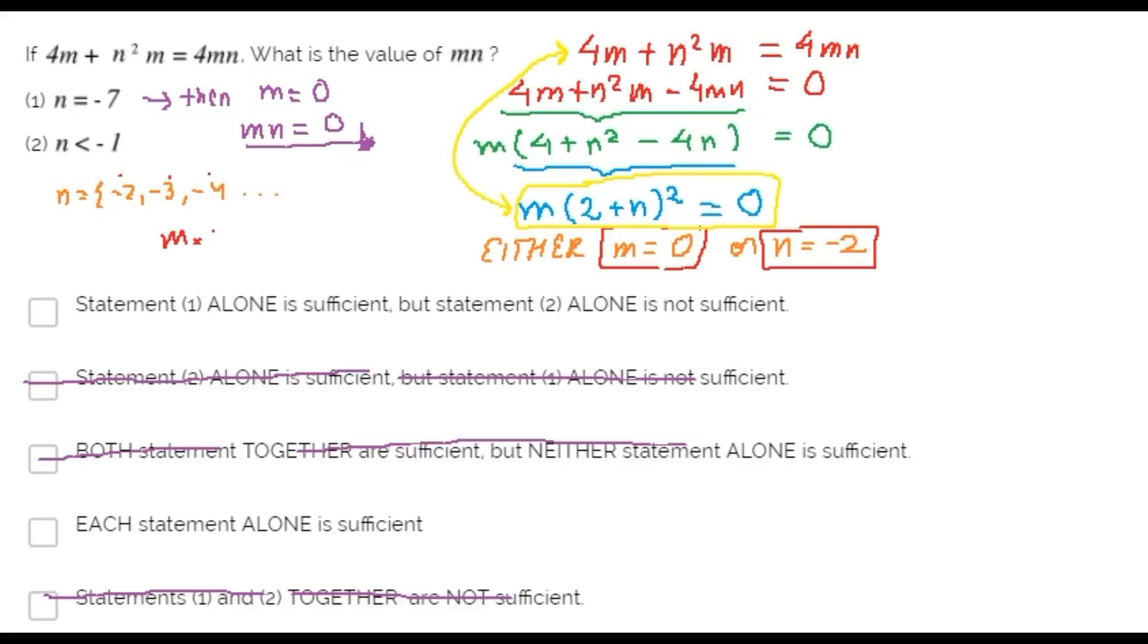We can't find the value of m times n. Statement two alone is not sufficient to answer the question.